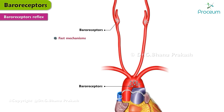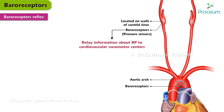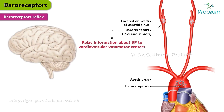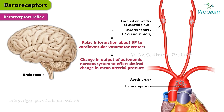The baroreceptor mechanisms are fast, neurally mediated reflexes that attempt to keep the arterial pressure constant via changes in the output of the sympathetic and parasympathetic nervous systems to the heart and blood vessels. Pressure sensors called baroreceptors are located within the walls of the carotid sinus and the aortic arch, and relay information about blood pressure to cardiovascular vasomotor centers in the brainstem.